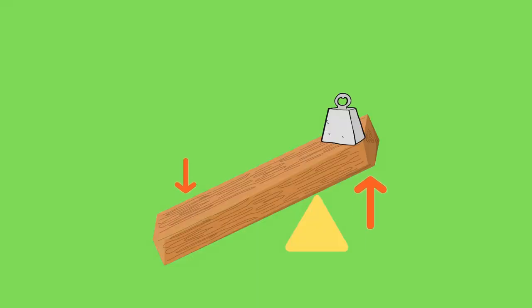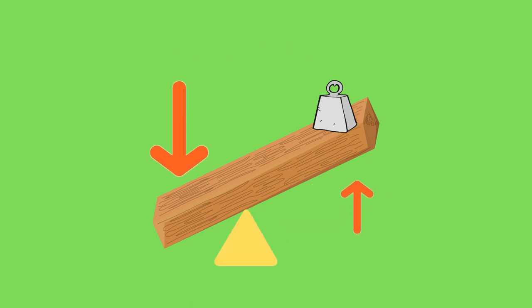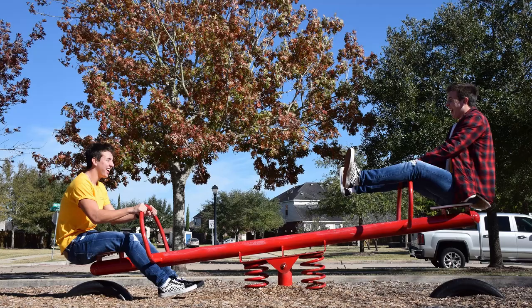If the fulcrum is closer to the load, then less effort is needed to move the load. If the fulcrum is closer to the effort, then more effort is needed to move the load. That's why the fulcrum is in the middle of a seesaw, so both people can have fun.